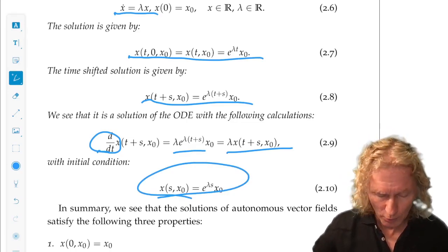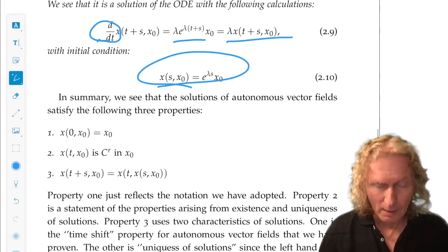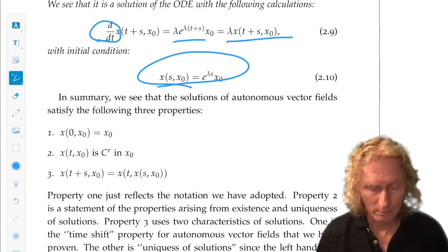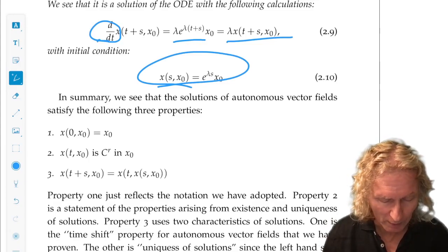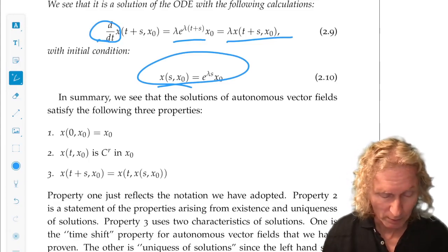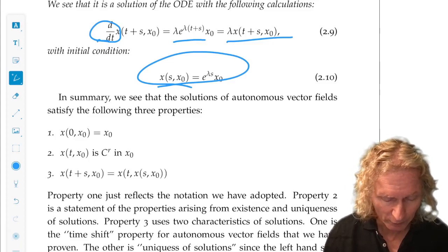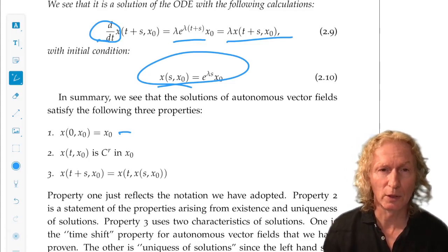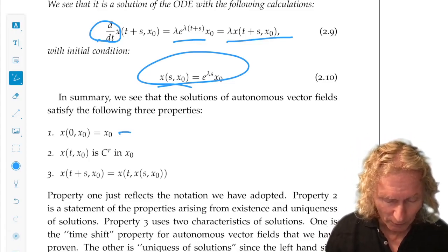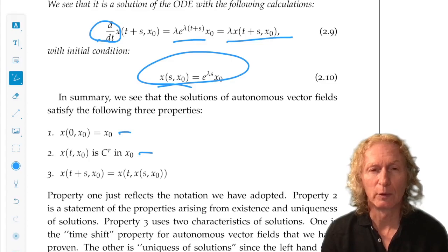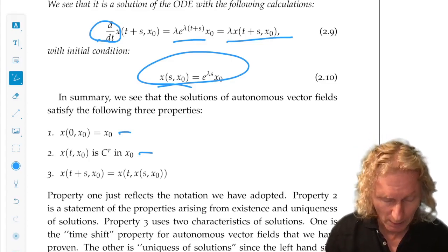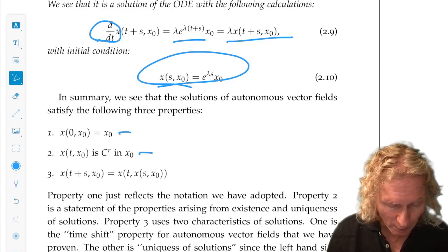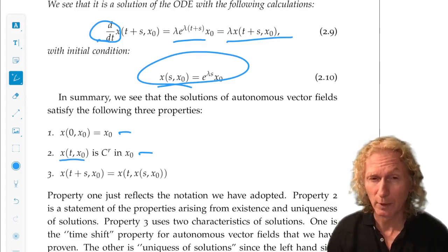Now, note that the solutions of this autonomous ODE satisfy these three properties. x at 0 of x_0 equals x_0. That's just the definition at time 0. This is what we get from existence and uniqueness of solutions. Our vector field is C^r. Then, for each value of t, our solution will be a C^r function of x_0.